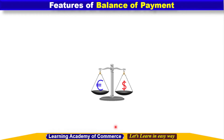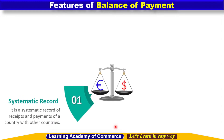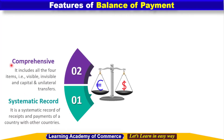Here we will understand some of the features of balance of payments. From the definitions and meaning studied earlier, the features that can be derived are: first, systematic record — balance of payment is a systematic record of receipts and payments of a country with other countries. Another feature is that it is comprehensive, meaning it includes all four items: visible, invisible, capital transfers and unilateral transfers.